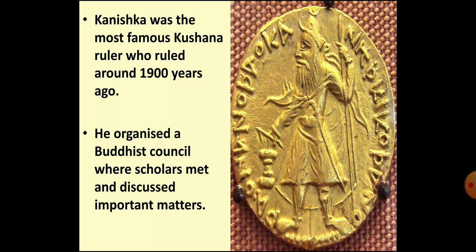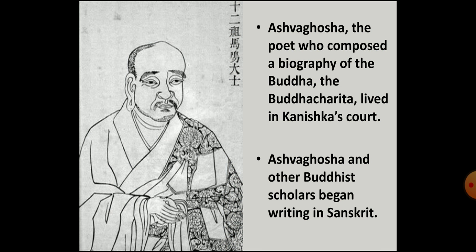Among the Kushanas, the most famous ruler was Kanishka. He ruled around 1900 years ago. Kanishka was a great follower of Buddhism. During his rule, he held a Buddhist council at Kundalavana in Kashmir, where various scholars met and discussed important matters. In Kanishka's court lived the famous poet Ashwagosha, who composed a biography of the Buddha named the Buddha Charita. Sanskrit became popular among Buddhist scholars by now, and Ashwagosha and other Buddhist scholars started writing in Sanskrit.